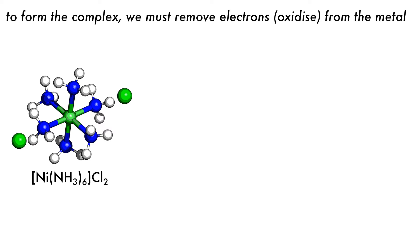To form a cation, we must remove electrons from the atom. This is called oxidation.